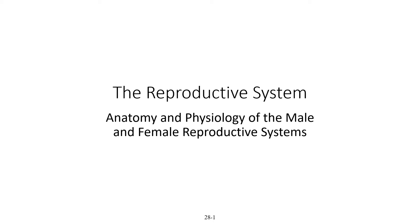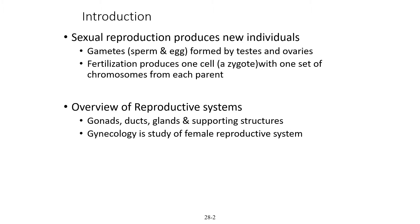This is the reproductive system. Today we'll be talking about both the anatomy and physiology of male and female reproductive systems. Sexual reproduction produces new individuals, which would be true of any species.